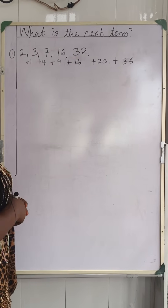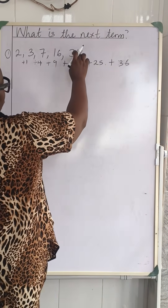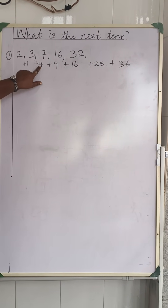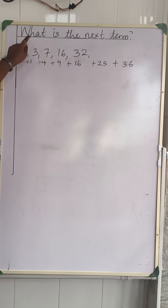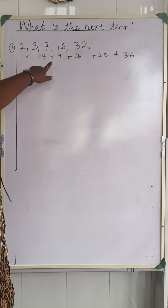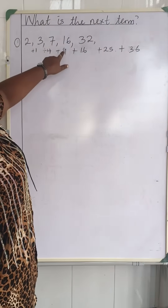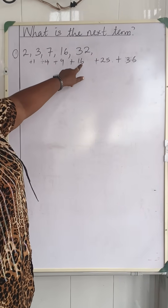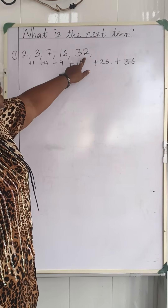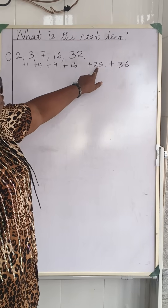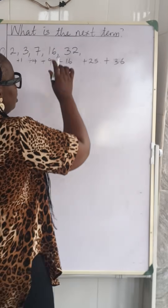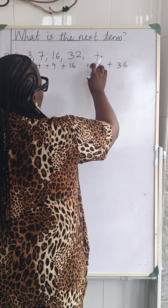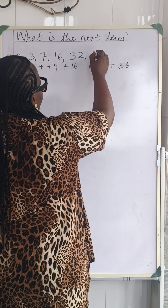So to get the next term, we add 25 to 32. Because 2×2 is 4, and we added 4 to 3 to get 7. Then 3×3 is 9, and we added 9 to 7 to get 16. Then 4×4 is 16, and 16 added to 16 gives 32. Now we have 5×5 is 25, and 25 added to 32 gives us the next term. So 5 plus 2 is 7, and 2 plus 3 is 5.